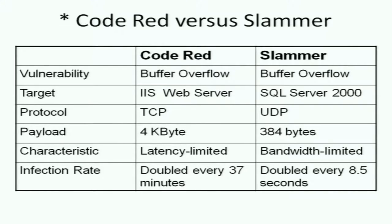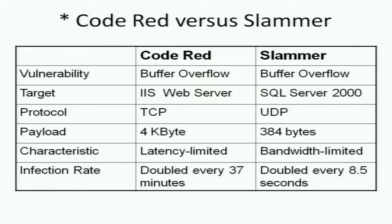The infection rate for Code Red doubled every 37 minutes, while in the case of Slammer it doubled every 8.5 seconds. So in a matter of less than an hour versus 24 hours, a huge number of machines were actually infected.